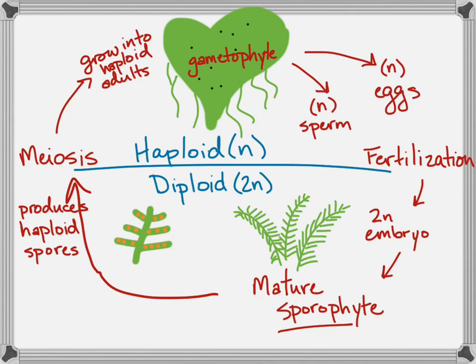Fertilization occurs, and then a mature fern would grow out of that, almost out of the gametophyte, because the fertilization is going to occur right there at that location.